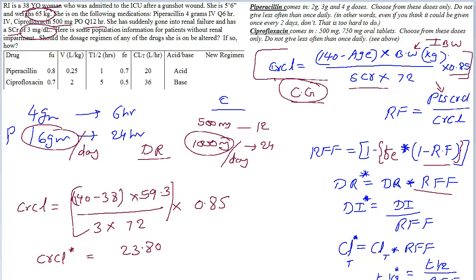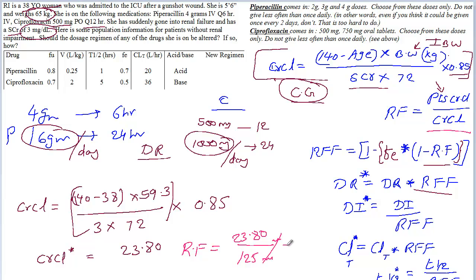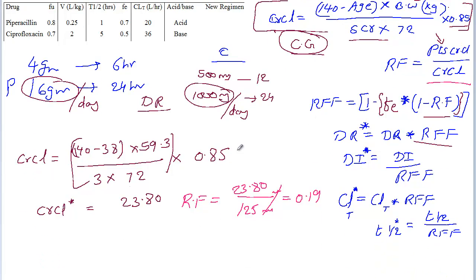Now we calculate the renal function of the patient. The renal function is the patient's creatinine clearance — 23.80 — divided by the normal creatinine clearance, which is 125 mL per minute. The units cancel and you get a value of 0.19.